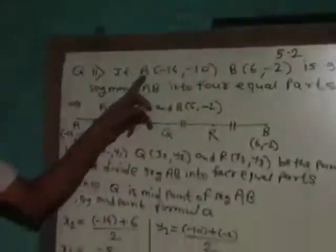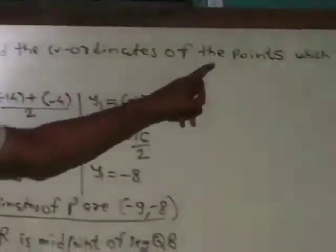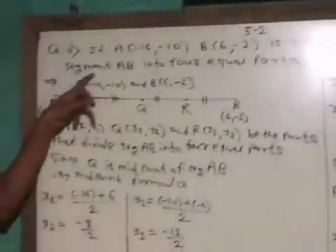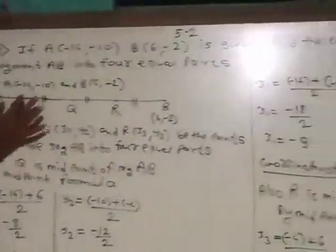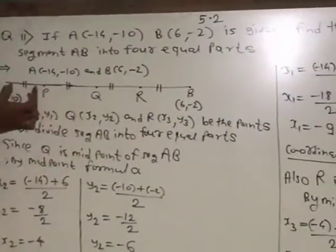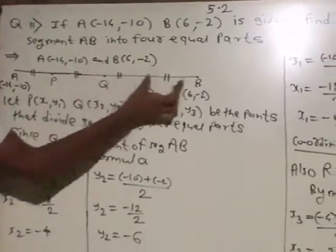Question number 11: If A(-14, -10) and B(6, -2), find the coordinates of the points which divide the line segment AB into 4 equal parts. Dividing into 4 equal parts means we take 3 points, which divide the given segment into 4 equal parts.